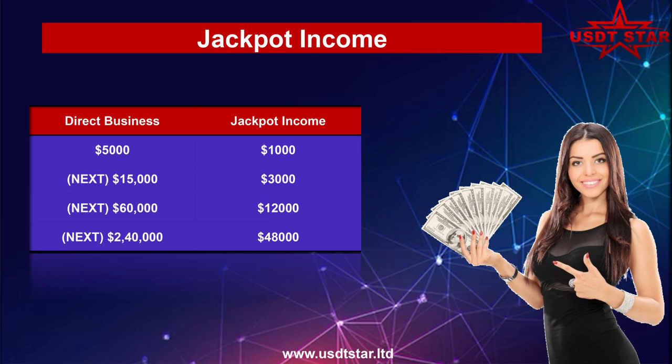The platform also offers jackpot income. If you complete $5,000 in direct business, you receive $1,000 jackpot income. Complete $15,000 in direct business and receive $3,000. Complete $60,000 in direct business and receive $12,000. Complete $240,000 in direct business and receive $48,000 as jackpot income.